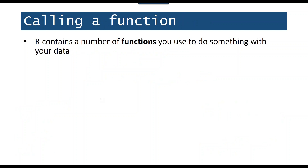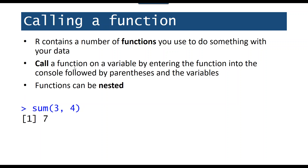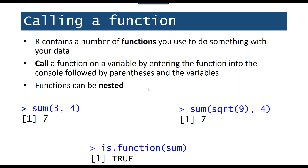Sum is a function, and R contains many functions. You use functions to do something with your data by entering the function name followed by parentheses and the variables — for instance sum(3, 4) prints out 7. Functions can also be nested, and this is very important because you can do a lot with just one line of code. For instance, SQRT() takes the square root, so I can take the square root of 9 — which is 3 — and add it to 4 using the sum() function. There's also a function is.function() — so I can type is.function(sum) and R will tell me TRUE, yes sum is a function.